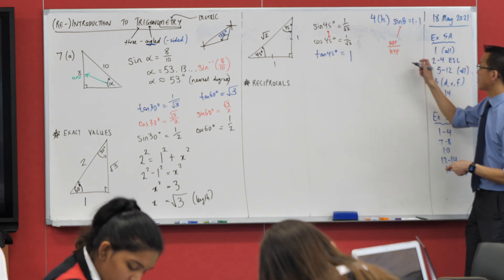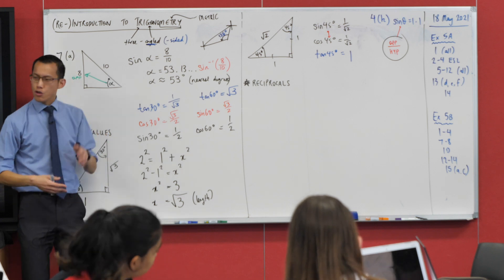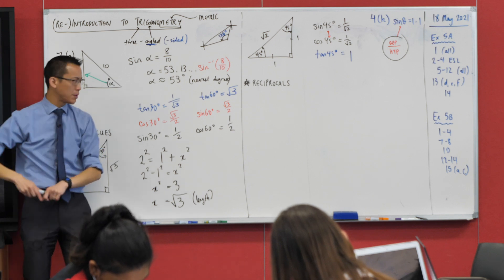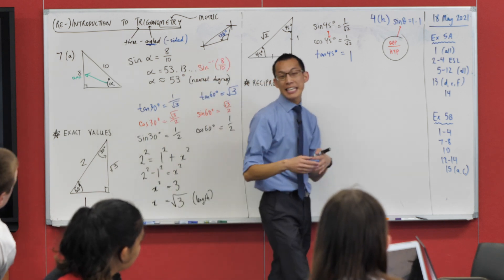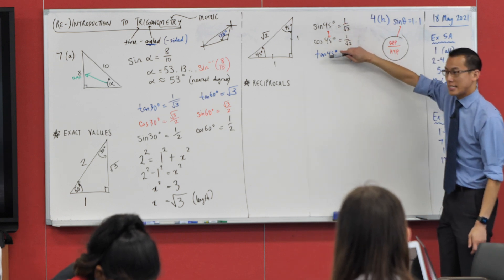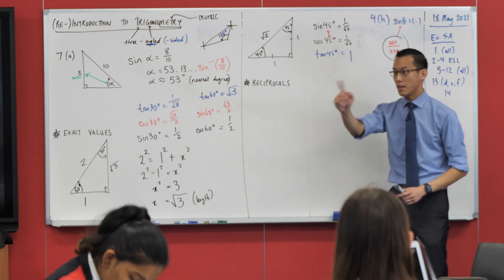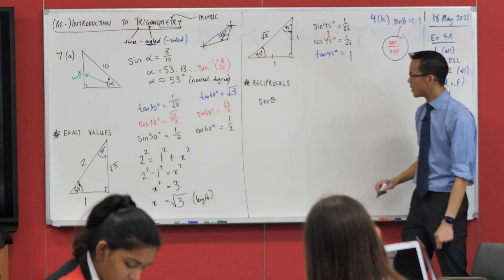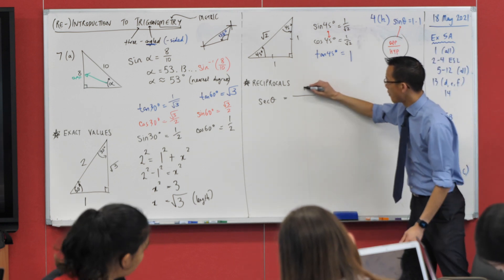One more subheading: 'Reciprocals.' The trigonometric ratios — like sine, which is opposite over hypotenuse — sometimes in problems you actually want it the other way around: hypotenuse over opposite. That's a reciprocal. These don't come up as often as sine, cos, and tan, but they come up enough that they get their own names. Does anyone know at least one of them? Sec θ — let's jot that down.